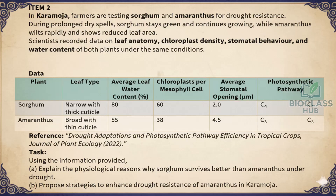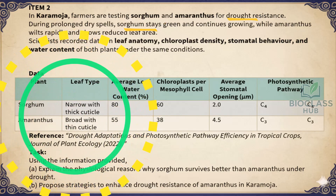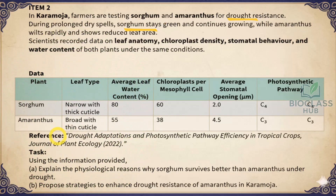Item 2. In Karamoja, farmers are testing sorghum and amaranthus for drought resistance. During prolonged dry spells, sorghum stays green and continues growing, while amaranthus wilts rapidly and shows reduced leaf area. Scientists recorded data on leaf anatomy, chloroplast density, stomatal behavior, and water content of both plants under the same conditions.